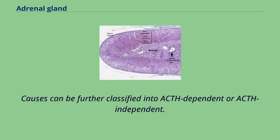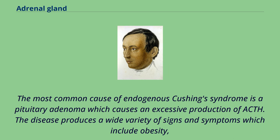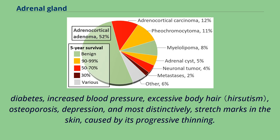Causes of Cushing syndrome can be further classified as ACTH-dependent or ACTH-independent. The most common cause of endogenous Cushing syndrome is a pituitary adenoma, which causes excessive production of ACTH. The disease produces a wide variety of signs and symptoms, which include obesity, diabetes, increased blood pressure, excessive body hair, osteoporosis, depression, and most distinctively, stretch marks in the skin caused by its progressive thinning.